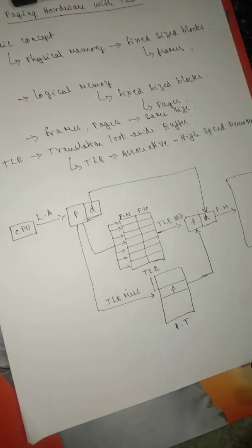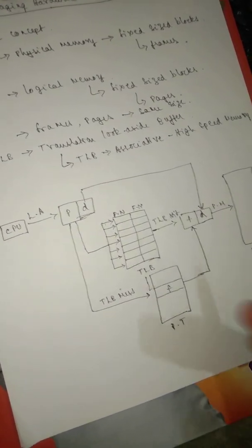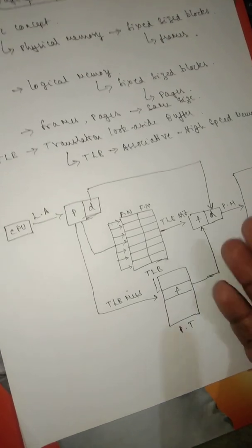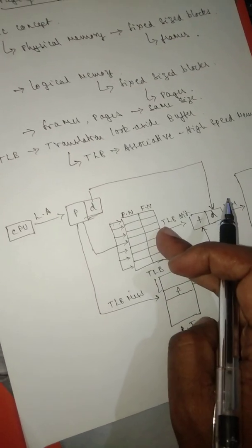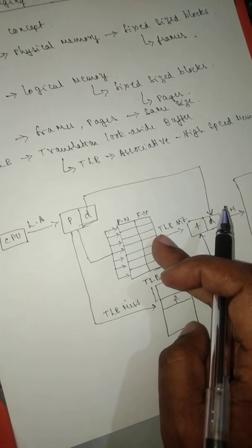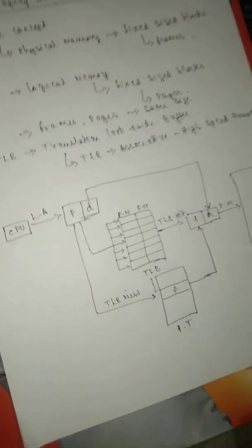Suppose even here the frame is not there. Then you have to go back to the backing storage device, bring in the appropriate pages based on the principle of locality, and update the page table as well as the TLB. This is called paging hardware with TLB.